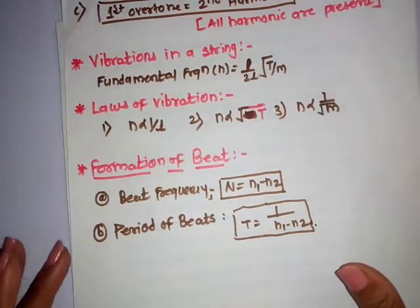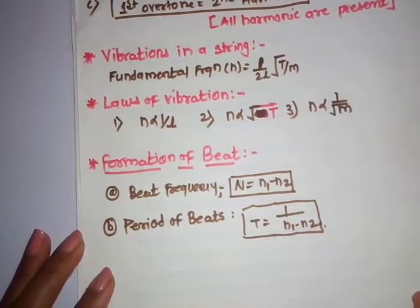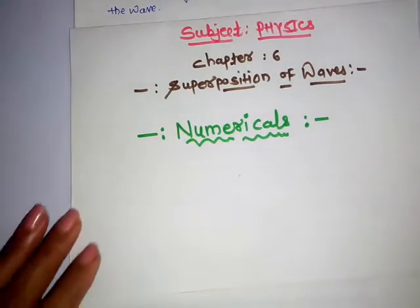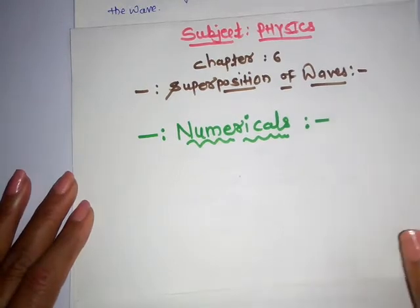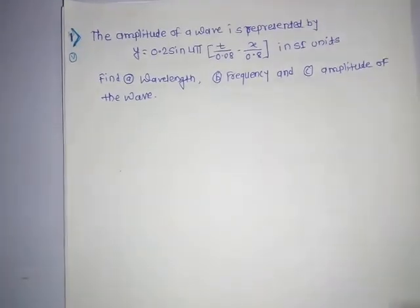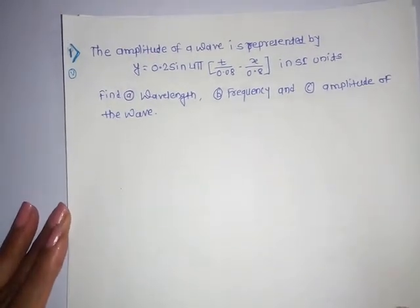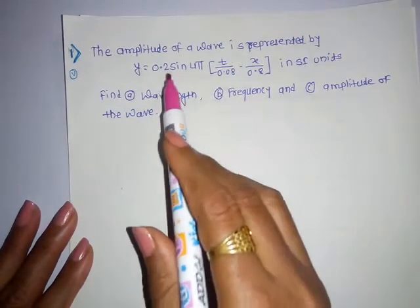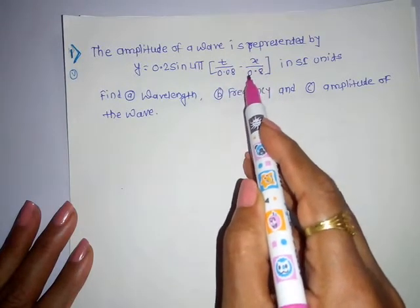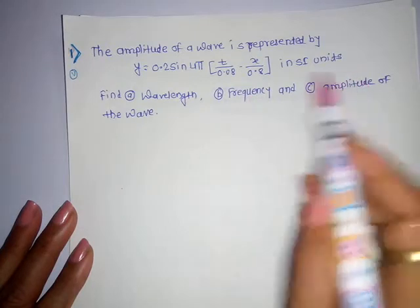This is all about the important formulas from this chapter. Now let us solve the numericals one by one. Students, keep the book with you while solving the numericals. I am reading the first example — example number 1, which in the book is denoted by Roman numeral V. The equation of a wave is given as y = 0.2 sin[4π(t/0.08 - x/0.8)] in SI units.